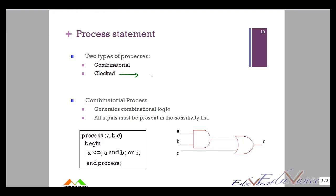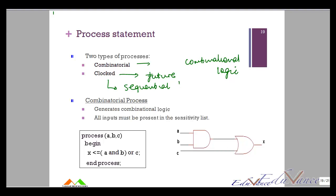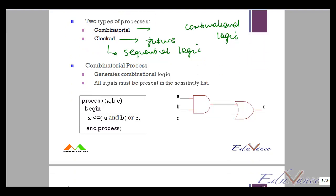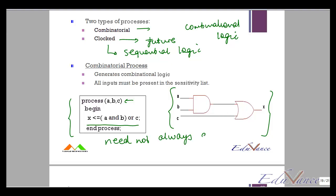There are two types of processes. A combinatorial process gives you combinational hardware. For example, with sensitivity list (A, B, C) and the statement 'X <= (A and B) or C', you get combinational hardware directly. This confirms what I said earlier — a sequential process need not always give sequential logic; this process gives you combinational logic.